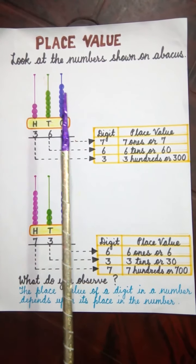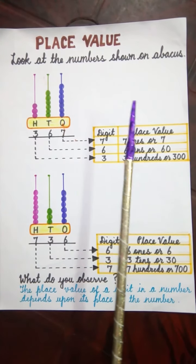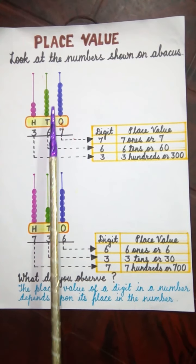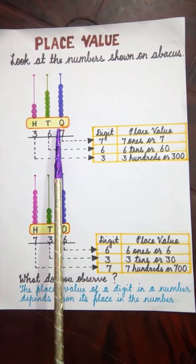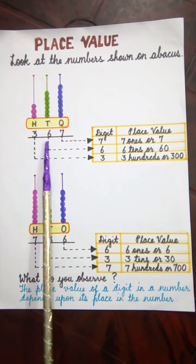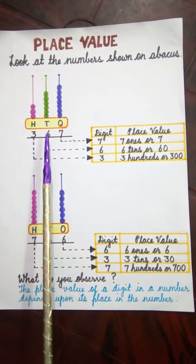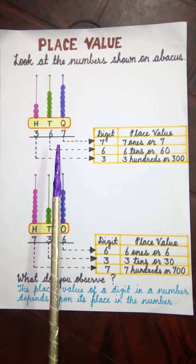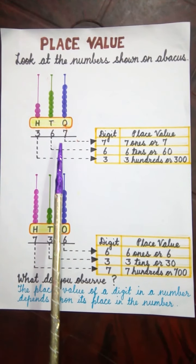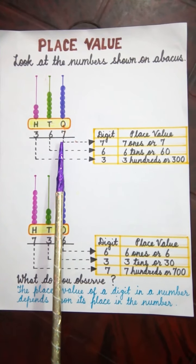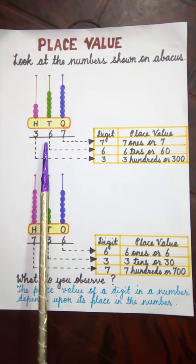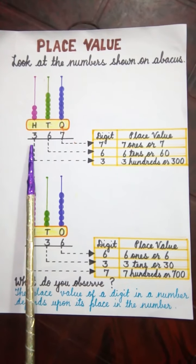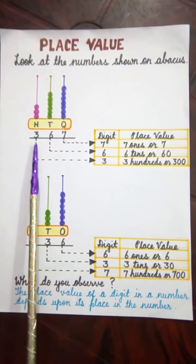Now look at the numbers shown on the abacus. There are 7 beads in the 1's spike, 6 beads in the 10's spike, and 3 beads in the 100's spike. So we can write digit 7 in the 1's place, digit 6 in the 10's place, and digit 3 in the 100's place.